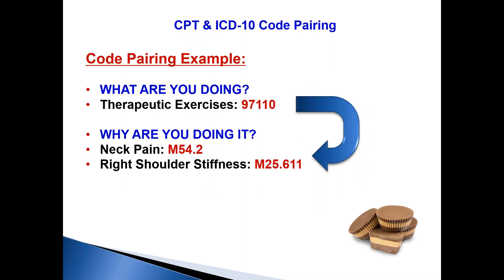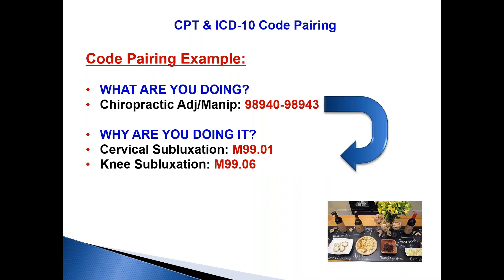Therapeutic exercise, 97110, is one of the most common rehab codes. What does it pair with? Right shoulder stiffness, M25.611 — a beautiful pairing. For a chiropractic adjustment, what should it pair with? Subluxation. And what would not pair properly: a chiropractic spinal adjustment billed as 98940 paired with M9906 — a knee subluxation. A spinal adjustment does not pair properly with a knee subluxation.